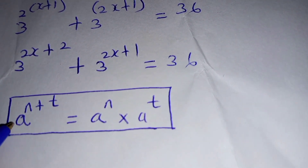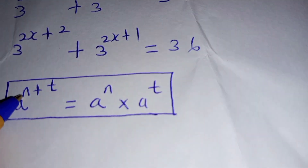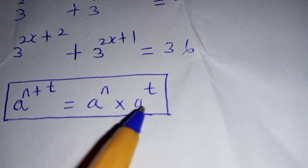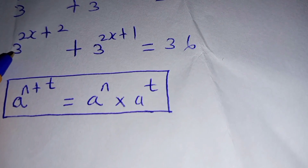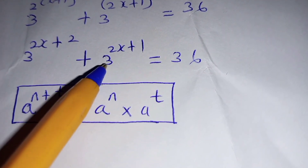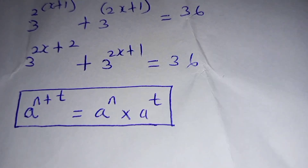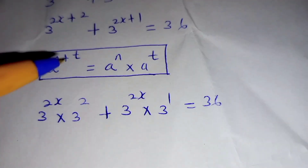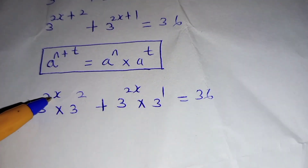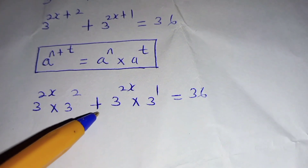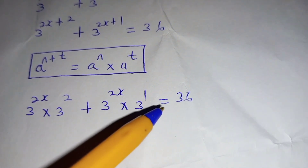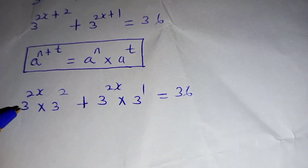We make use of this law of indices: if you have a to the power of (n plus t), it is the same as a^n times a^t. So we want to separate 3^(2x+2) and write it in terms of its parts, and also 3^(2x+1). We write it this way to obtain: 3^(2x) times 3 squared, plus 3^(2x) times 3^1, which is equal to 36.